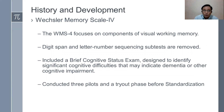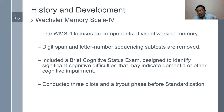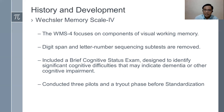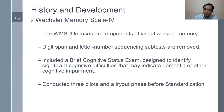The Weschler Memory Scale 4 focuses on the components of visual working memory. Digit span and letter number sequencing subtests are removed, making the testing procedures and the test itself shorter. It included a brief cognitive status exam designed to identify significant cognitive difficulties that may indicate dementia or other cognitive impairment, better filtering premorbid or prevailing medical conditions before conducting the memory scale.